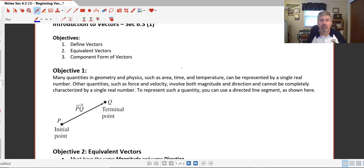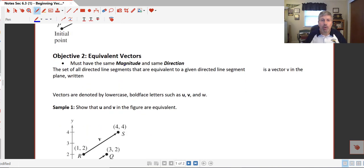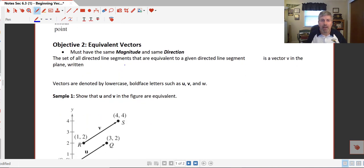So to represent such a quantity, we'll use a directed line segment as shown here, and we are going to call this a vector. This would be vector PQ with an initial point P and a terminal point Q, and you can see here the arrowhead indicating the direction of our vector. In order to have equivalent vectors, they must have the same magnitude and direction. So the set of all directed line segments that are equivalent to the given directed line segment is a vector in the plane.